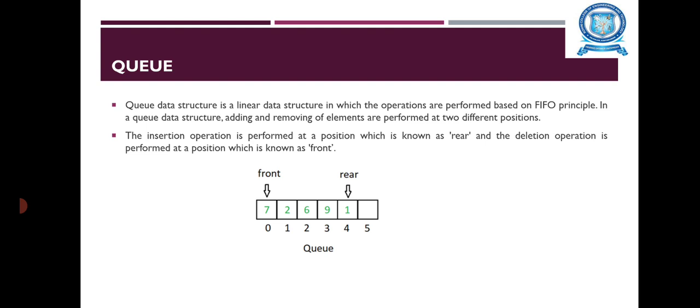Queue Data Structure is a linear data structure in which the operations are performed based on the FIFO principle, that means first in first out. In a Queue Data Structure, adding and removing of elements are performed at two different positions. The insertion is performed at the position known as rear, and the deletion is performed at the position known as front. This is a representation of a Queue — here the front and rear points are marked.